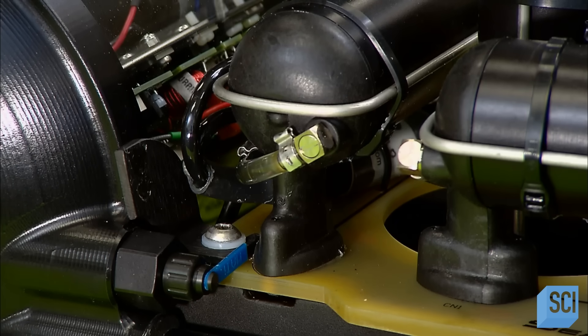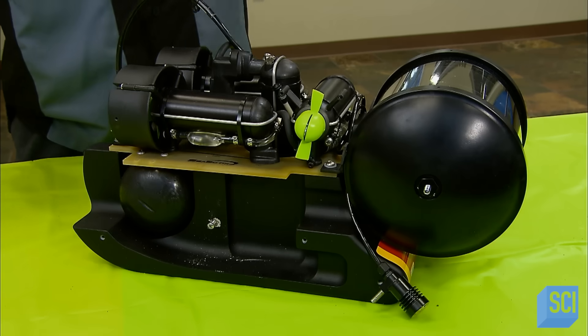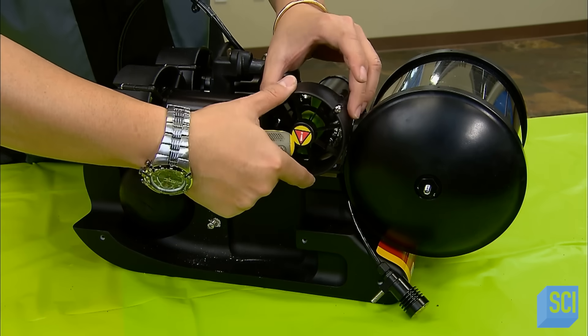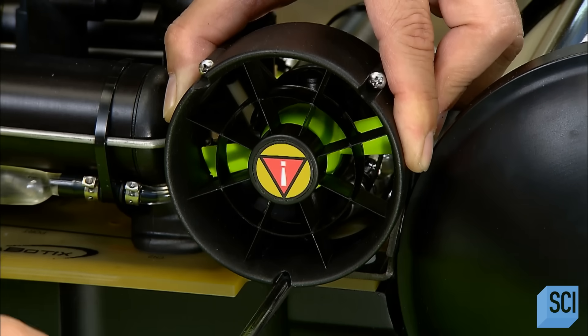They cap each propeller with a vented cover called a court nozzle. This isolates the water flow, maximizing the propeller's efficiency.